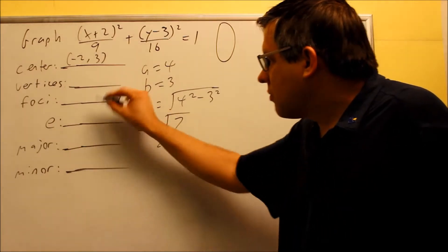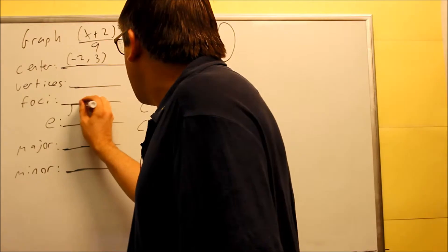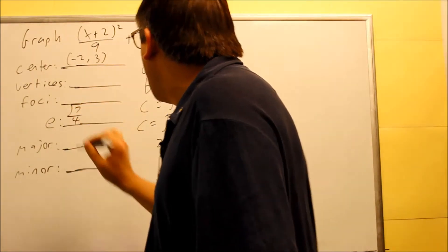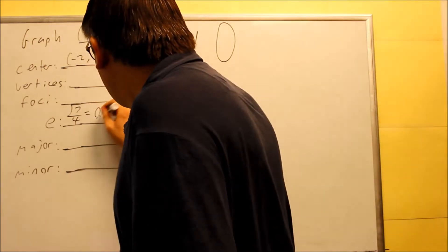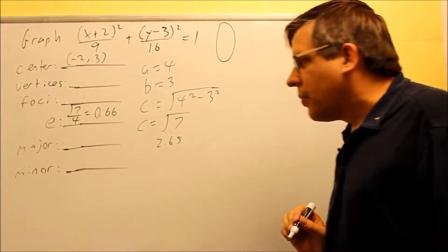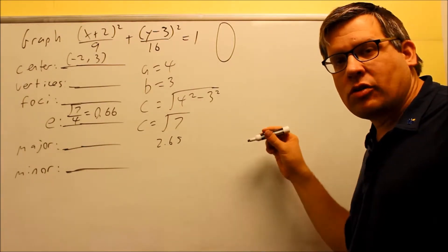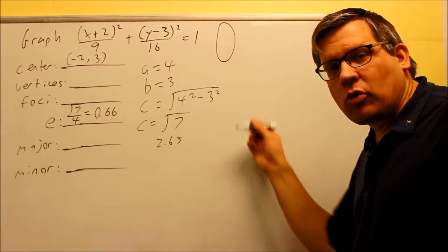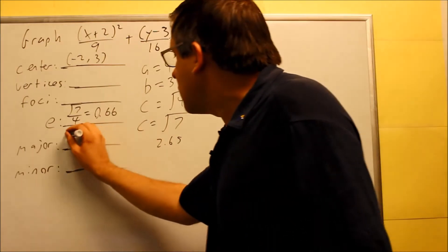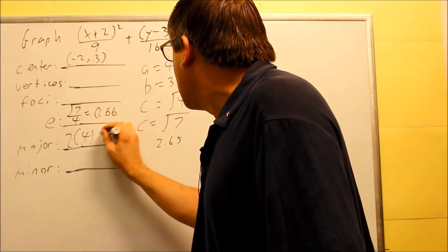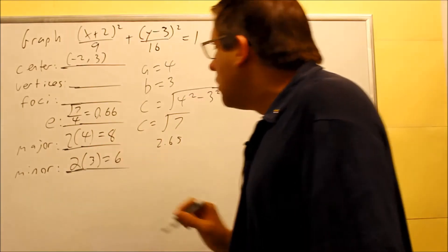The eccentricity is the square root of 7 over a, which is 4, giving approximately 0.66. Because 0.66 is closer to 0, we should expect the ellipse to be more rounded than previous examples. The major axis is 2 times a: 2 times 4 is 8. The minor axis is 2 times b: 2 times 3 is 6.